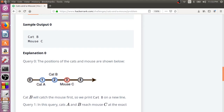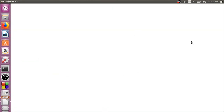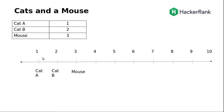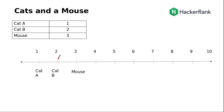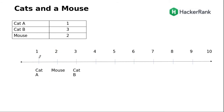Let's try to understand this with the visual diagram. We have Cat A and Cat B. They move at the same speed. Cat B moves one position toward the mouse, and at the same time Cat A also moves. After one unit of time, Cat B actually reaches the mouse, and that is the reason Cat B is the winner. In the second case, both cats move toward the mouse from opposite directions and in one unit of time both reach the mouse at the same time, so Cat A and Cat B fight and the mouse escapes.